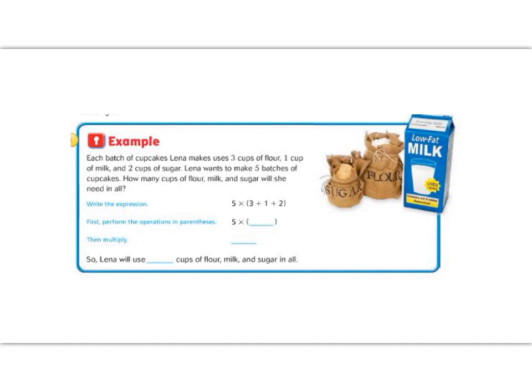So if we look at our numerical expression, we have 3 and 1 and 2. And then she's going to make 5 batches. So we're multiplying times 5. But in the end, it asks us just how many cups she needs in all. So the first thing that we want to do is add everything inside the parentheses.